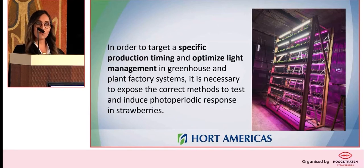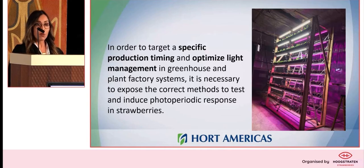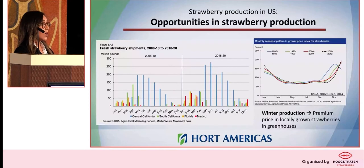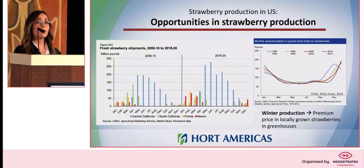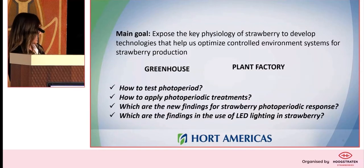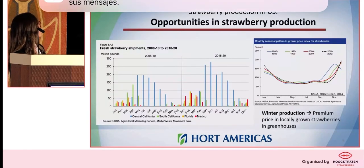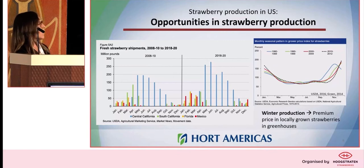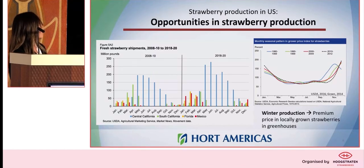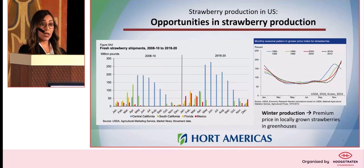In plant factories, we're paying for light, so we really want to know the amount of light the plant needs in order to flower. If we can save energy, of course we will. In greenhouses, we can target specific production windows that can be good for growers. In the United States, there is a very specific window where most of the production is done. We have a lot of production in certain months, but in the winter window, we don't have a lot of production and actually import a lot of strawberries from countries like Mexico. So this can be a really good option for a grower to target a better price on the market by producing inside of greenhouses.